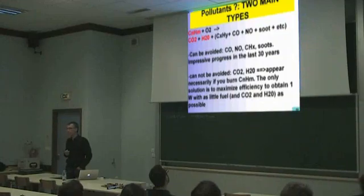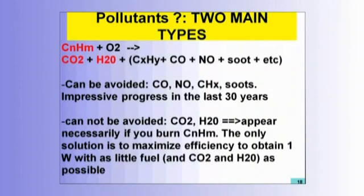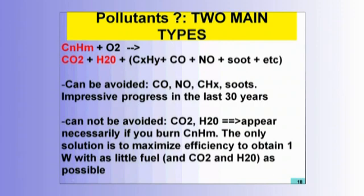There are two main types of pollutants. In this course we're going to burn a lot of hydrocarbons — molecules where you find N carbon and M hydrogen atoms. You burn them with oxygen and it gives you CO2, water, and a few other things. Those other things are the things that can be avoided: unburned hydrocarbons CₓHᵧ, CO, NO — all these are due to combustion which is not perfect, so they can and should be avoided. CO for example would just kill you — if you have too much CO in a room you're going to die in a short time.